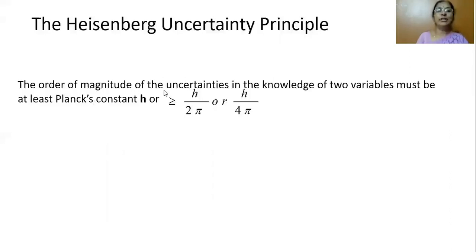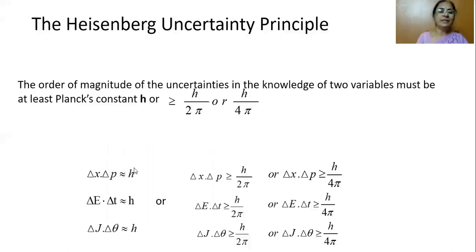According to Heisenberg Uncertainty Principle, the order of magnitude of the uncertainties in the knowledge of two variables must be at least equal to Planck's constant, or greater than or equal to h by 2 pi or h by 4 pi. It can be written as: delta x delta p is approximately equal to h; delta E delta t is approximately equal to h; delta J delta theta is approximately equal to h.